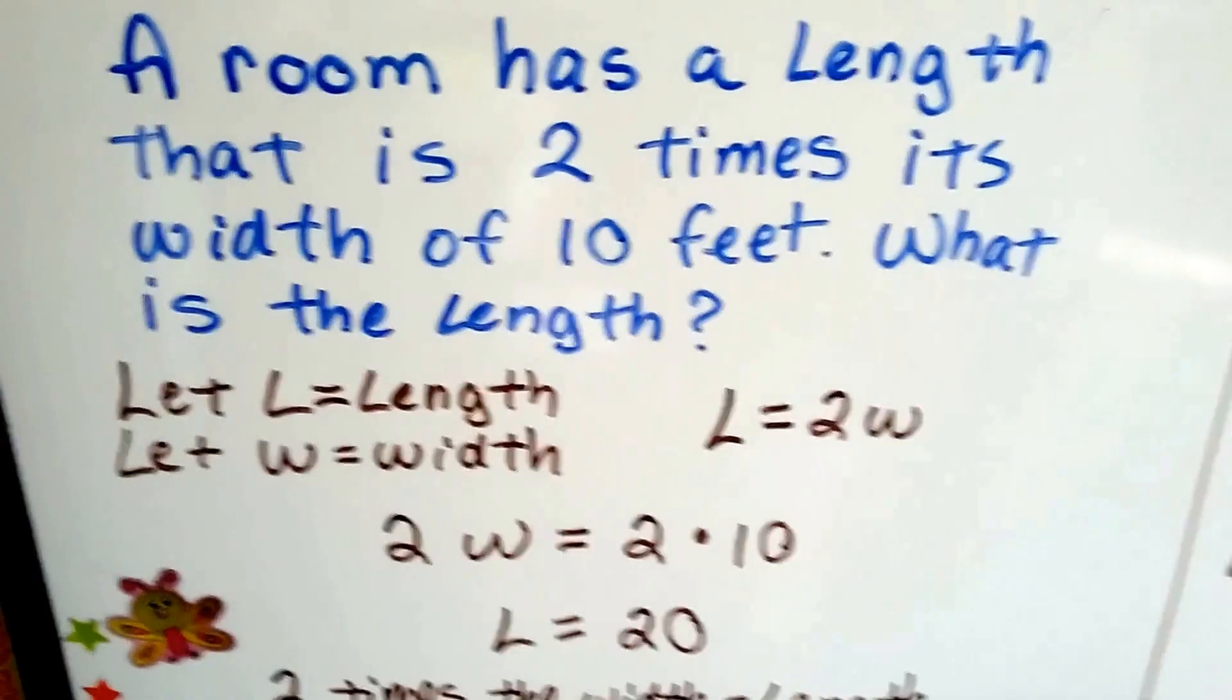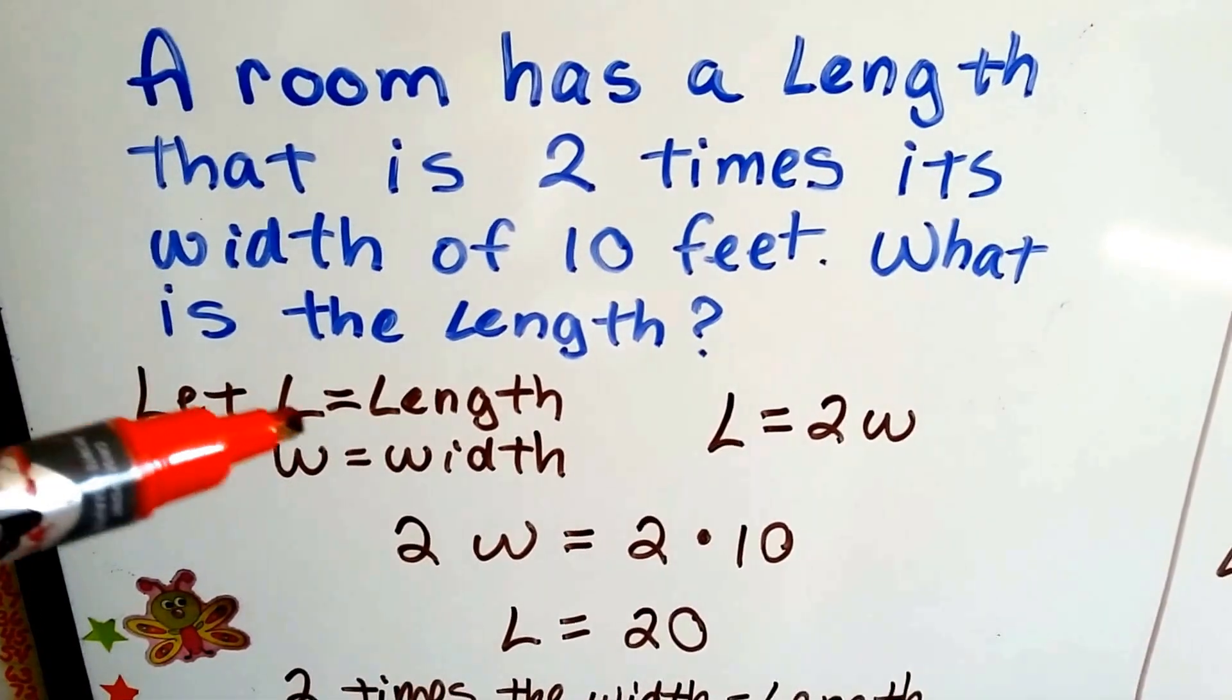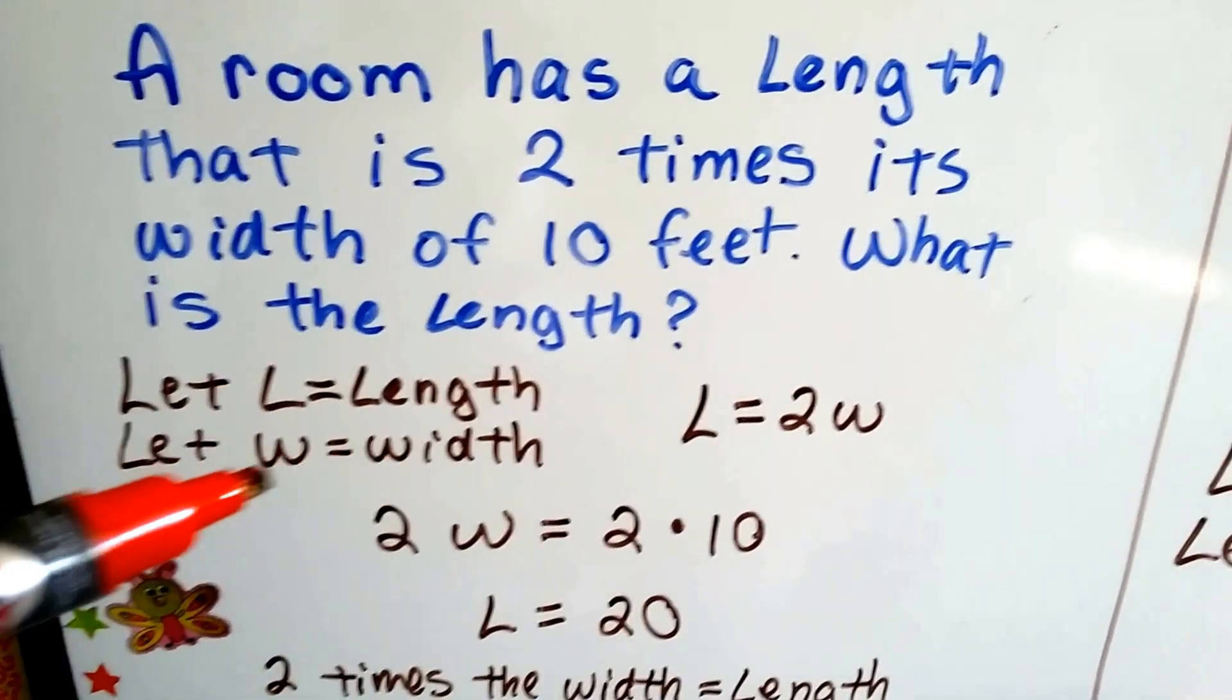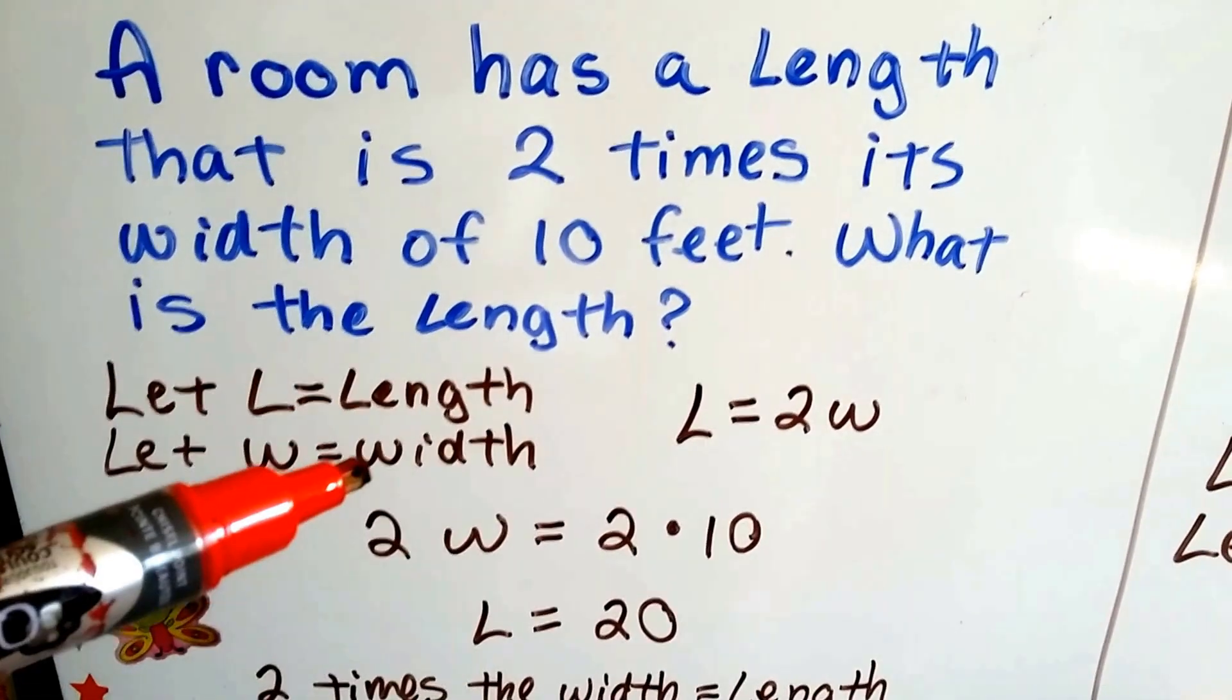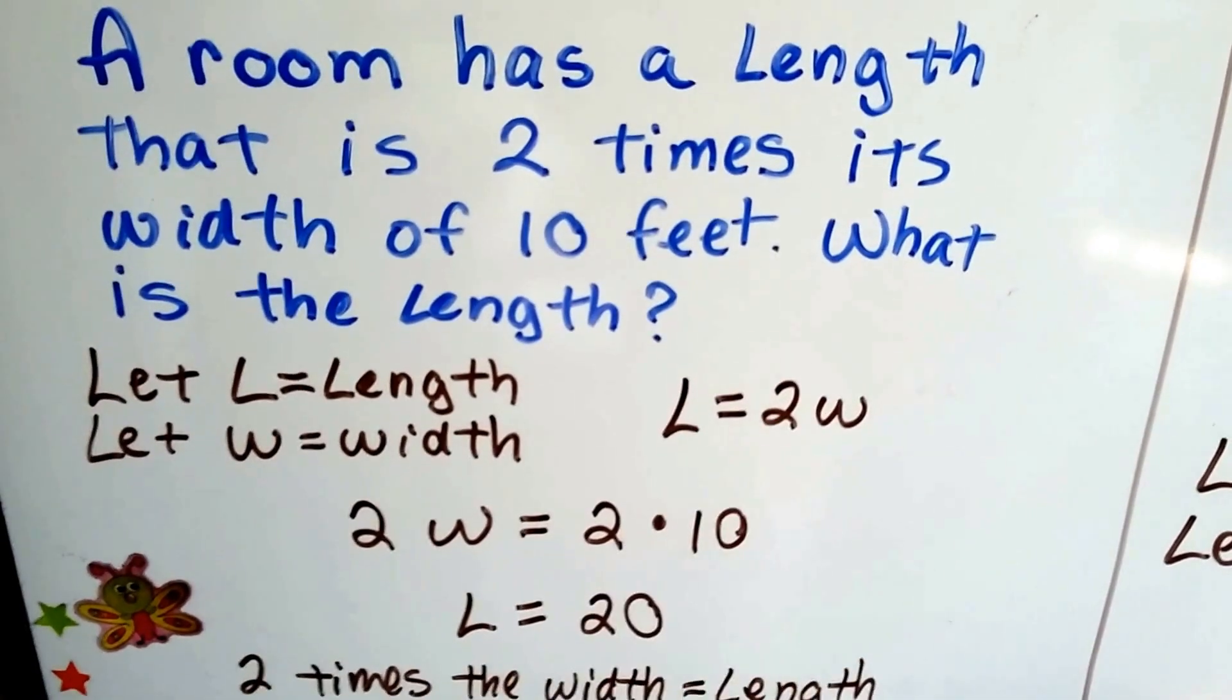We know that whatever the length is, we just have to double the width and they'll be equal. So we're going to let L stand for length because it starts with an L and W stand for width because it starts with a W. Then we can keep track. The length is equal to 2 of the widths, 2 times the width.